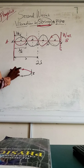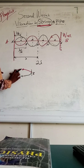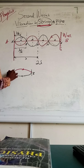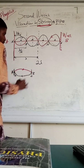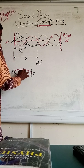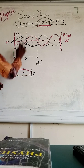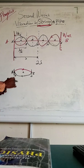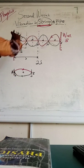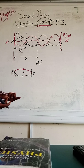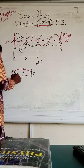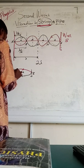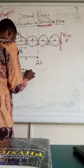Now, a standing wave will be generated like this. You have a node here, another node here, and here you have an antinode, and an antinode here. This is a node here at those endpoints. If you bring this out, this looks like one loop. So this is the length of the guitar string that was plucked.